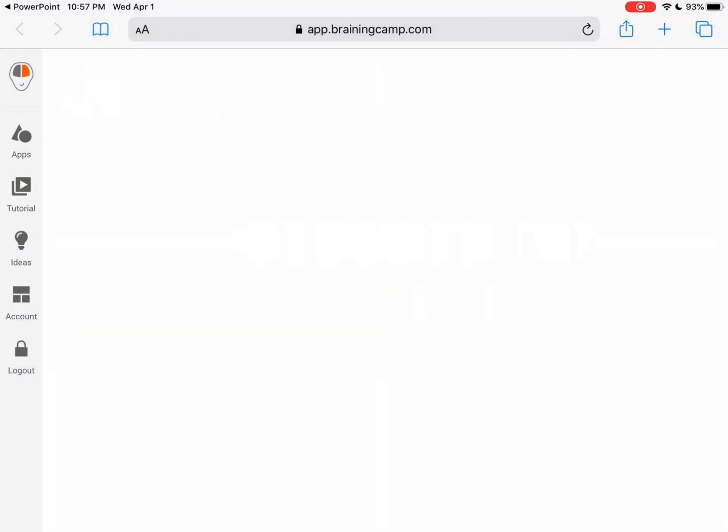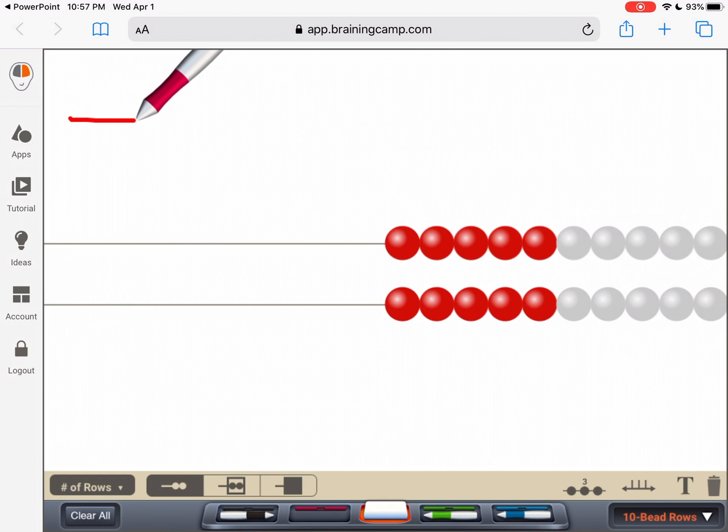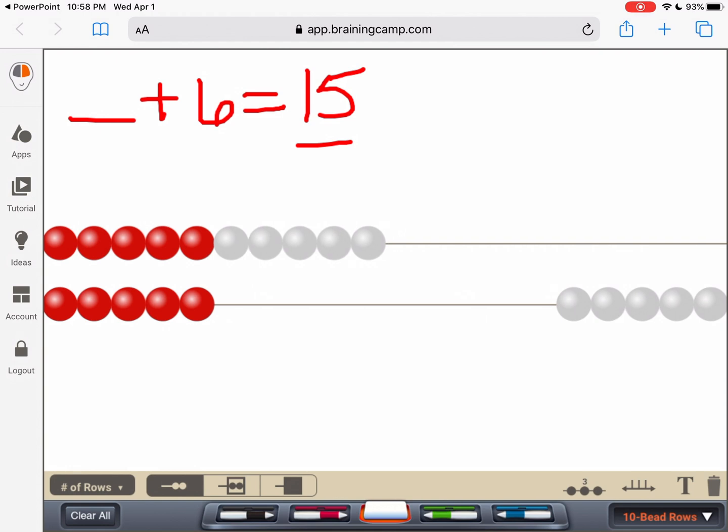We're going to use a RekenRek to help us with this. So what do we know? We know something plus six equals 15. So we don't know what he started with, but we do know that his son gave him six more. And what are we trying to get? 15. So how could we get 15 on the RekenRek? What could we do? Did you say you could move over these four right here? Yeah, that would give us how many now? 10. We need 15. So what could we do? We could bring over these five.